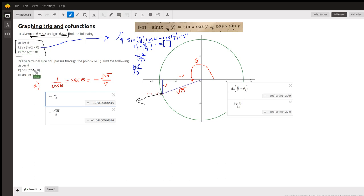So here's part a: secant of theta. Secant of an angle is adjacent over hypotenuse. By the way, I got this value for the hypotenuse using the Pythagorean theorem. So 64 plus 9 is 73, so the hypotenuse is the square root of 73.